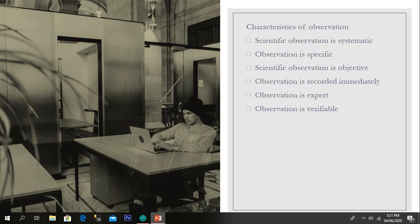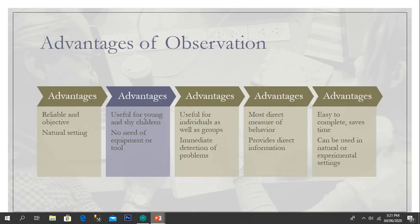There are some advantages of these observational dimensions: they are reliable and objective, take place in natural settings, are useful for young and shy children, require no equipment or tools, are useful for individuals as well as groups, allow immediate detection of problems, provide the most direct measure of behavior, provide direct information, are easy to complete on time, and can be used in natural or experimental settings.